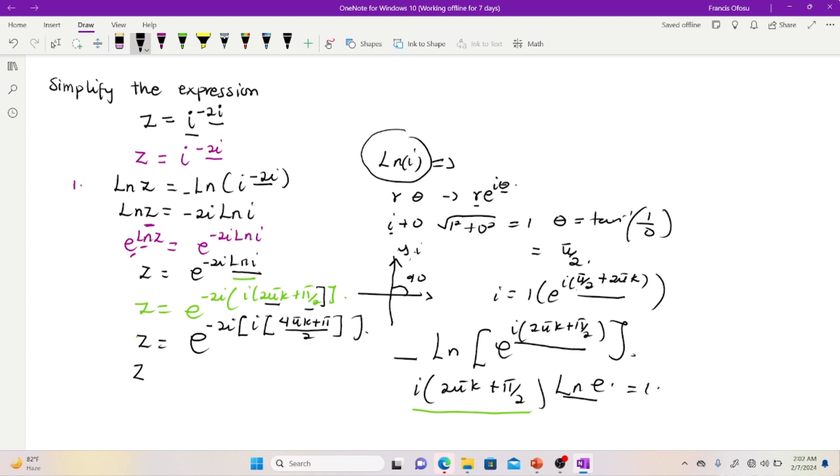And z will simply be equal to e. Then at this point, I can multiply this and this. So negative 2i times i. You know that i times i is negative 1. So times 2. Negative 2 will be positive 2. So 2 multiplying the expression 4πk plus π. Everything here over 2.